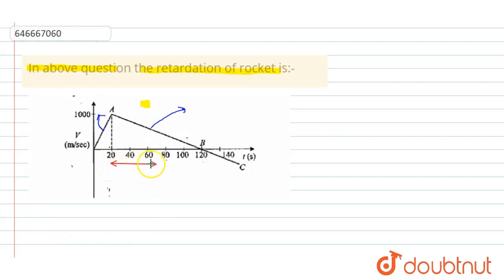This distance on time axis, 120 minus 20, that is 100 second, so I take this as 100 and this height in this triangle, this height, is 1000 meter per second, so I am writing it here. This height is 1000 meter per second.